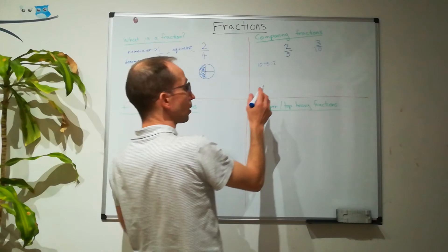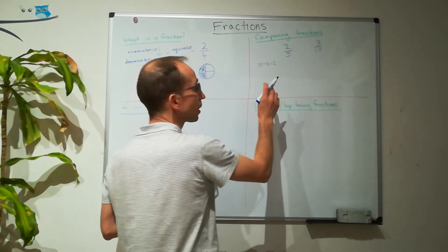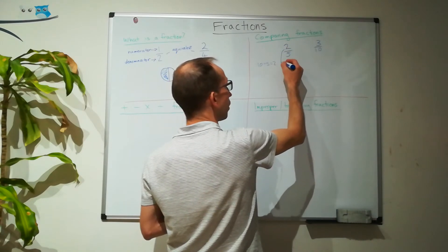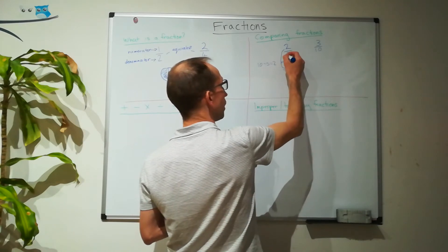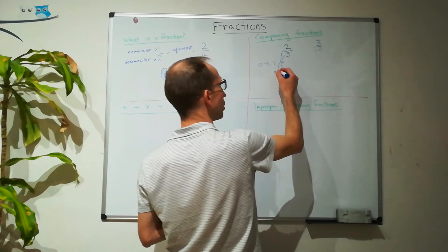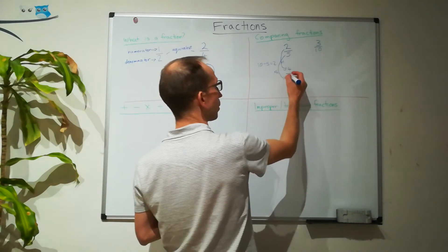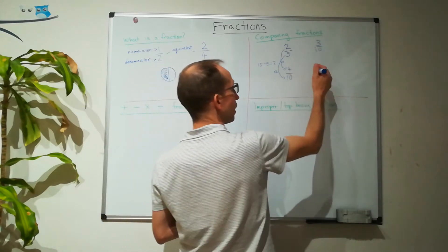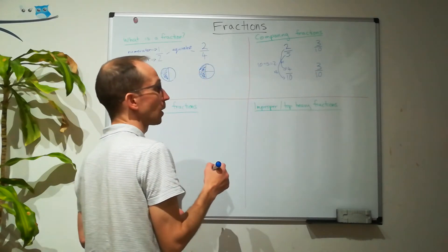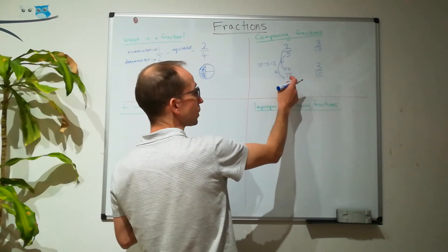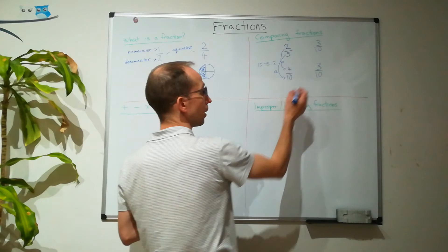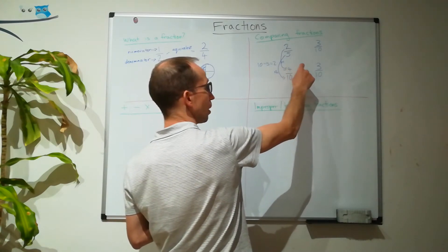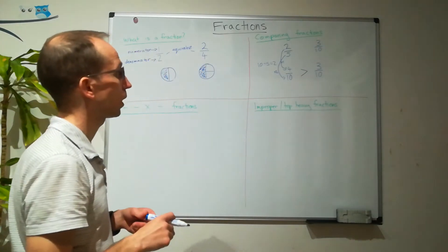There's a rule with fractions: we can keep the value of the fraction the same if we multiply the top and the bottom by the same number. So if we multiply the top by two, two times two is four, and multiply the denominator by two, two times five is ten. Now we've got four-tenths and three-tenths. Four-tenths is bigger, and we can use the greater than sign — four-tenths is greater than three-tenths.